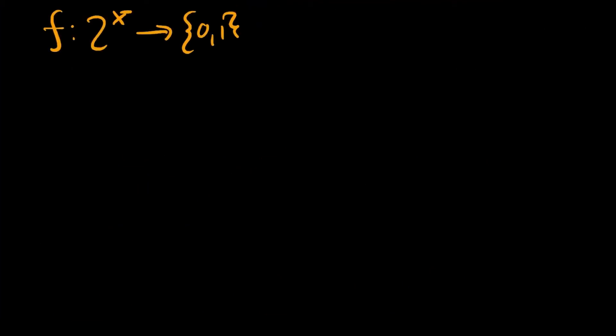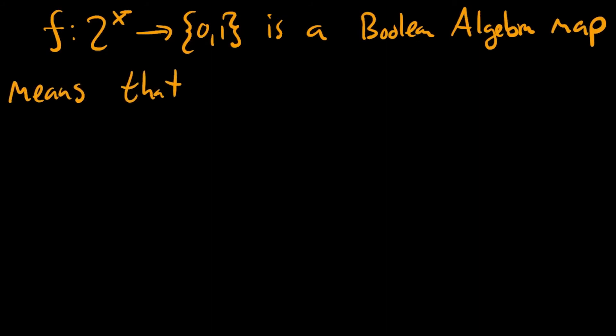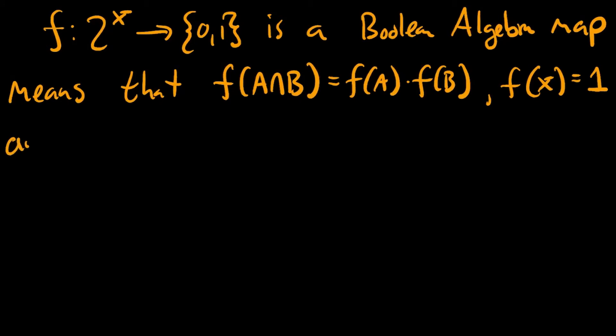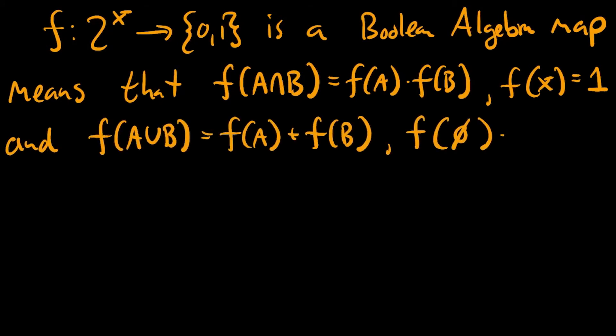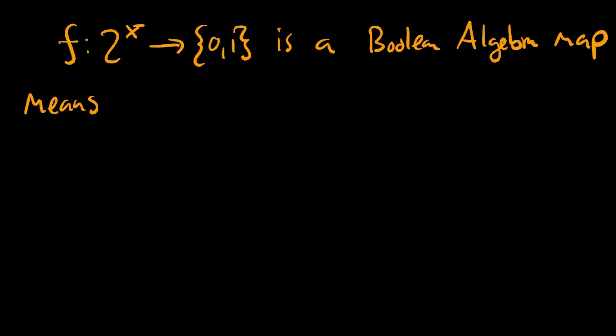Now, if this function little f respects intersection and the units for intersection, and in addition respects union and the units for union, then it's called a Boolean algebra map. And what implications does this have for the collection script F? Well, let me begin by saying if it respects the units for union, it means it sends the empty set to 0. So that means that the collection script F is a proper subset of the power set of X. It doesn't contain everything.